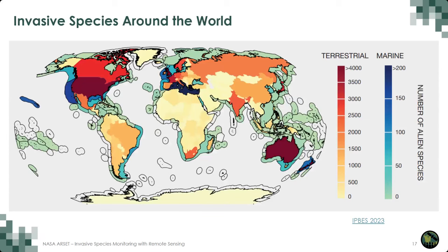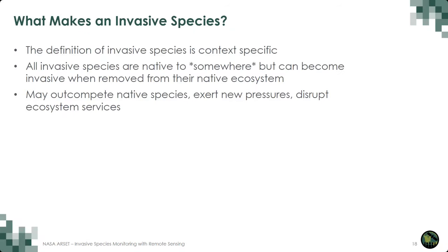The IPBES report referenced earlier shared that more than 37,000 established invasive species have been recorded worldwide. This number includes more than 3,500 invasive species with known negative impacts. This diagram presented in the report shows the abundance of both terrestrial and marine invasives. Note the large amount of terrestrial invasives in Australia and the United States, as well as marine invasives along the Pacific coast.